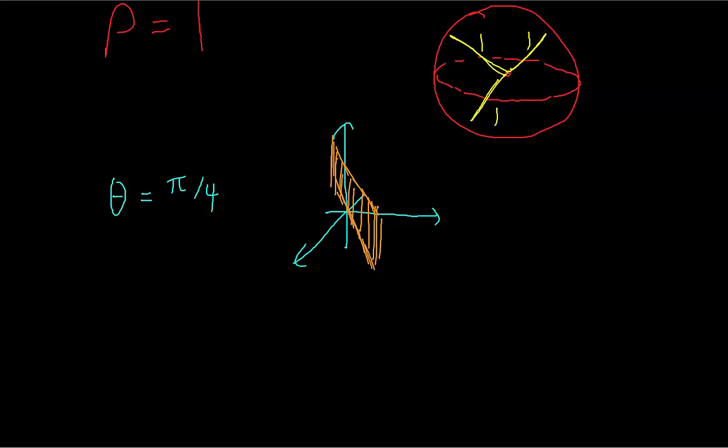And then if we have phi equals an angle, then the equation becomes a cone. Because it's the collection of all the points which are tilted a certain angle from the z-axis.